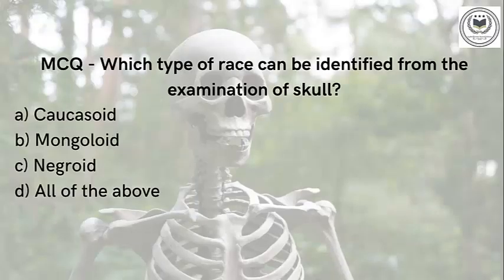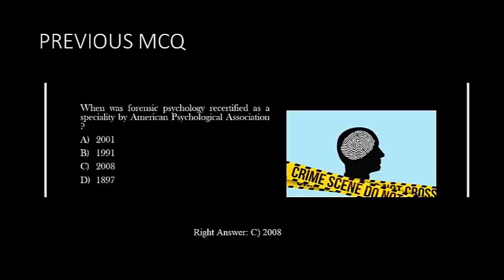Now let's see how much you have learned. Which type of race can be identified from the examination of a skull? A. Caucasoid, B. Mongoloid, C. Negroid, D. All of the above. If you know the answer, do comment in the section below. For the previous video, the topic was history of forensic psychology, and the question was: when was forensic psychology recertified as a speciality by the American Psychological Association? The answer is C — 2008.